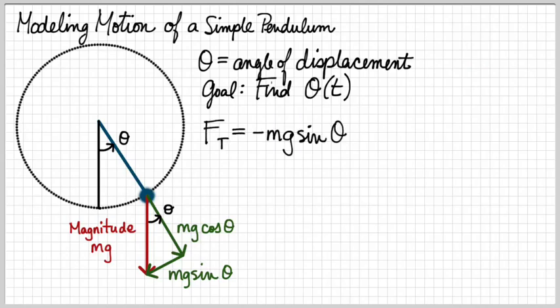This means that the total force tangential to the ball's direction is negative mg sin theta. Why negative? Because gravity is acting as a restorative force, it's always acting in the opposite direction from the displacement.